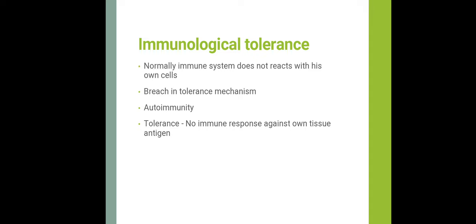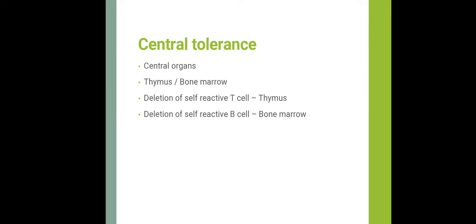Under immunological tolerance, normally the immune system does not react with its own cells due to a protective mechanism called tolerance. Any breach in the tolerance mechanism predisposes to several autoimmune diseases. Tolerance means no immune response against its own tissue, achieved through two mechanisms: central tolerance and peripheral tolerance.